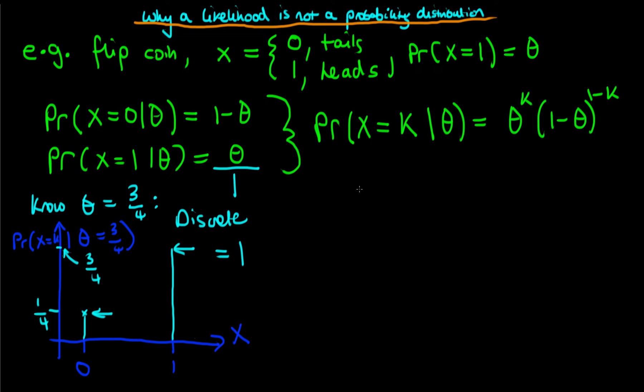Instead, let's suppose that we flip the coin and we obtain heads. In other words, we obtain x is equal to one. Then if x is equal to one, we can write down our rule. Our probability that x is equal to one is just equal to theta. Supposing this, we can then draw what this probability looks like as a function of theta.